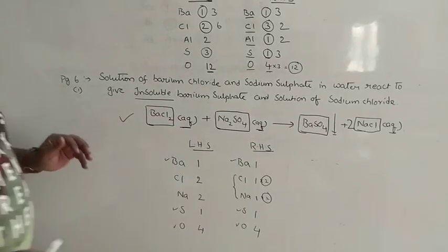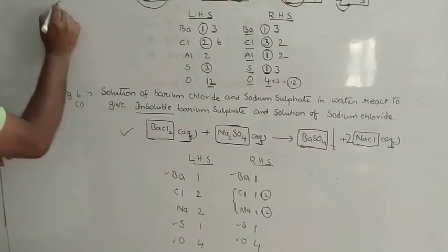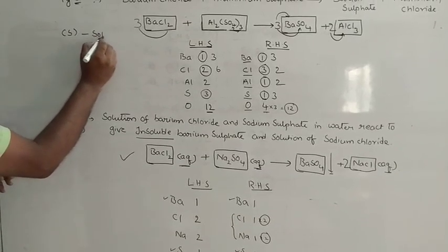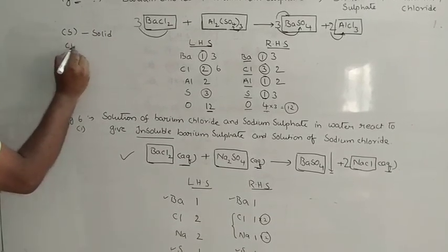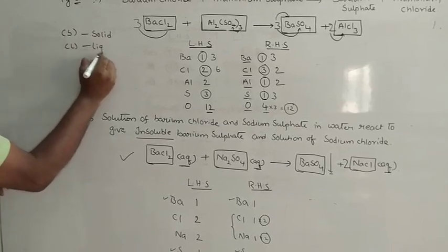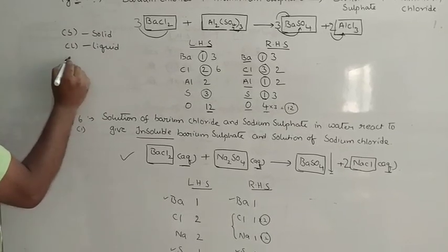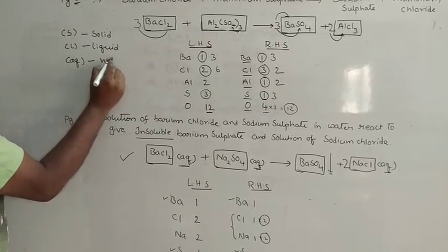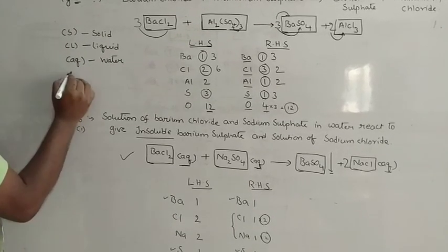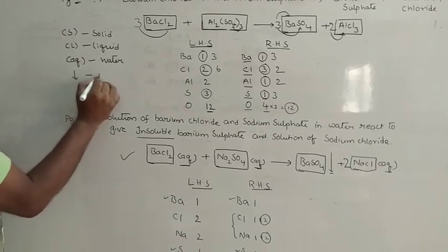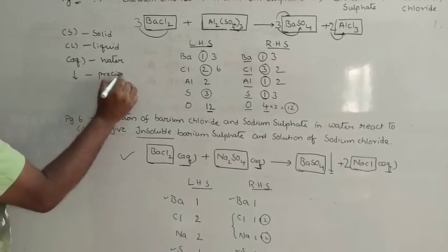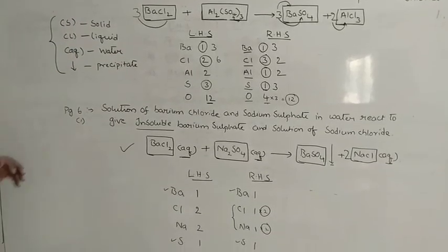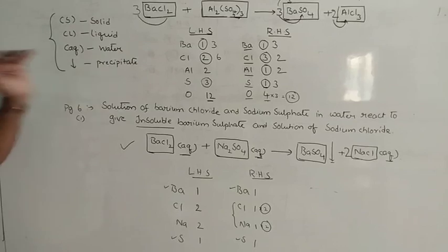Sometimes we need to represent chemical equations using certain symbols, wherein S represents a solid, L represents a liquid, AQ represents a salt dissolved in water, and a down arrow indicates the formation of a precipitate. These symbols help us in indicating a particular chemical equation properly.